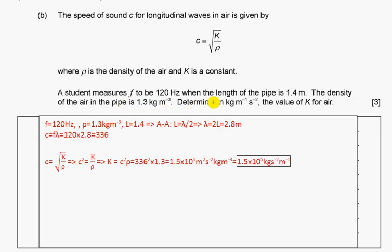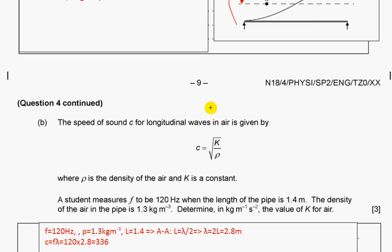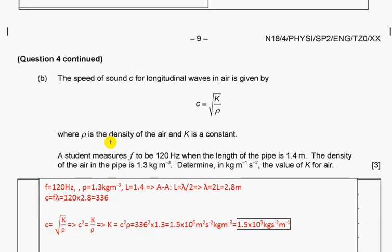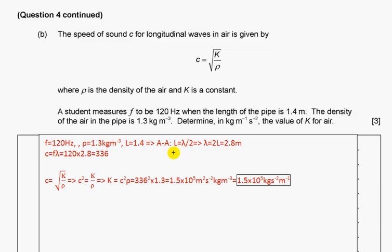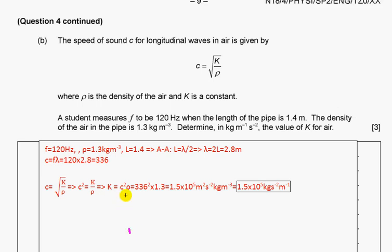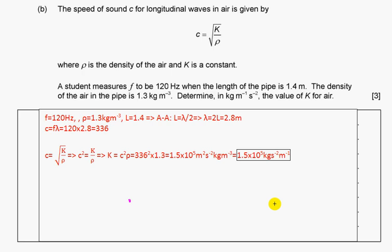Because it is fundamental frequency, the distance will be λ/2, so λ/2 equals the length of the pipe, therefore λ equals 2L. Speed can be found using the wave equation: frequency multiplied by wavelength. Now we copy this formula, make square root of both sides, rewrite formula for k. We know speed and density, so we can find constant k.